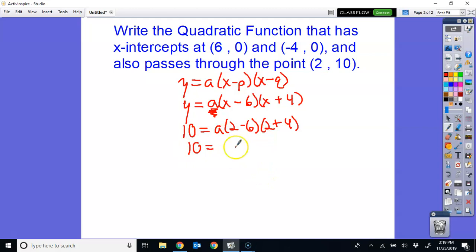And so you plug in 2 for x, you plug in 10 for y, and you solve for a. Now this one is a little bit easier than the other one, but it doesn't mean it's always going to have a pretty answer. But 2 minus 6 would be negative 4. 2 plus 4 would be 6. So 6 times negative 4 would be negative 24.